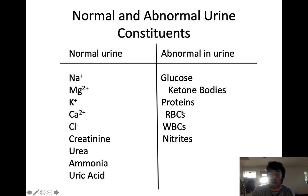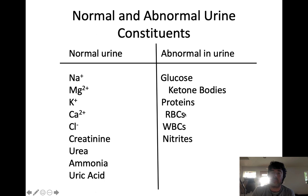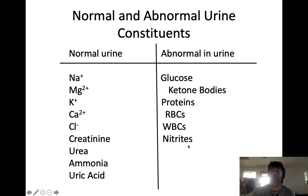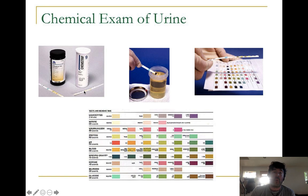Red blood cells should never be found in urine. When you find them, that's called hematuria — you're bleeding into the urine. That could indicate damage in the kidneys, a kidney stone, or a bladder stone. White blood cells should also never be found in urine — if they are, that could be reflective of an infection in the urinary tract. Nitrites are the byproduct of bacterial metabolism, specifically E. coli. If you find both white blood cells and nitrites, that is 100% indicative of a urinary tract infection.